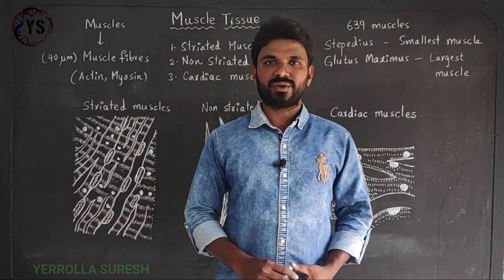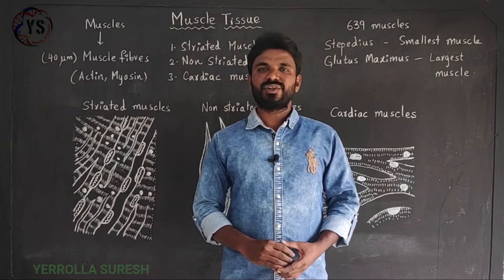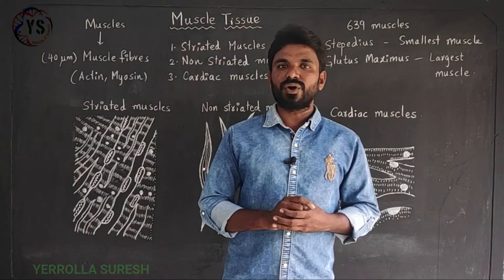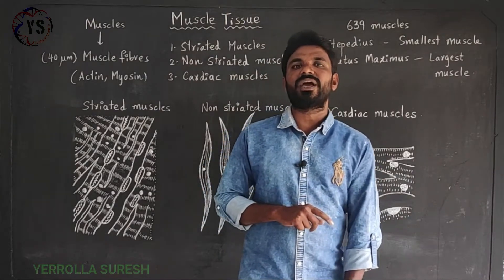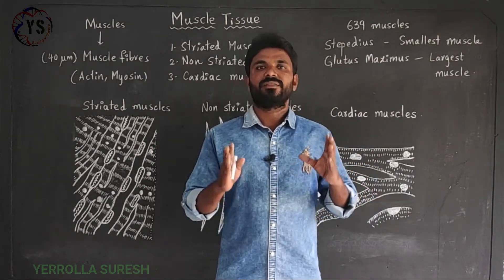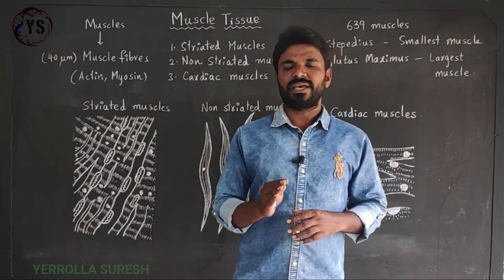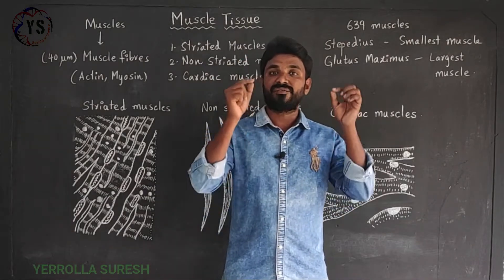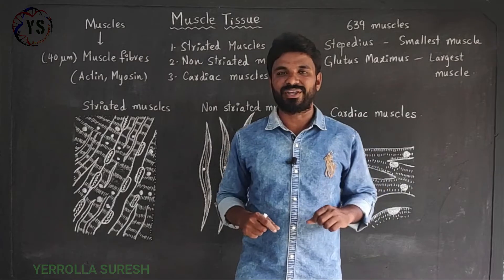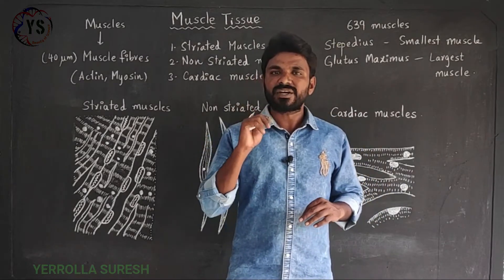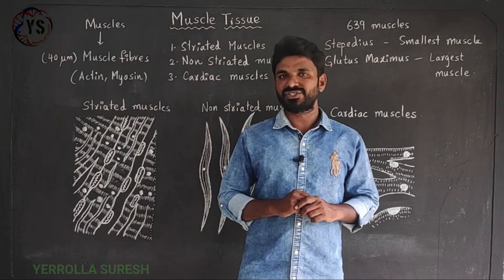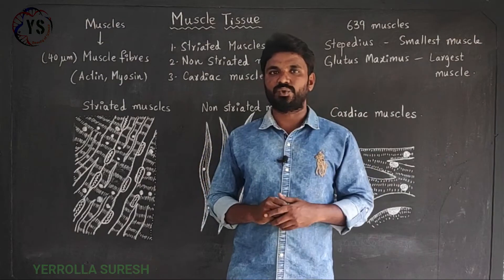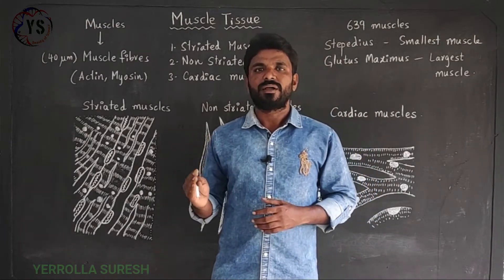Hi friends, I'm Yusuresh, you're watching Erol Asuresh YouTube channel. In this video I'll explain about muscle tissue. Muscle tissue is also called muscular tissue. Before going to know about muscle tissue, we should have knowledge regarding the tissues present in animals. Tissue means a group of cells similar in structure and function. In animals, generally four kinds of tissues are seen: epithelial tissue, connective tissue, muscle tissue, and nerve tissue.